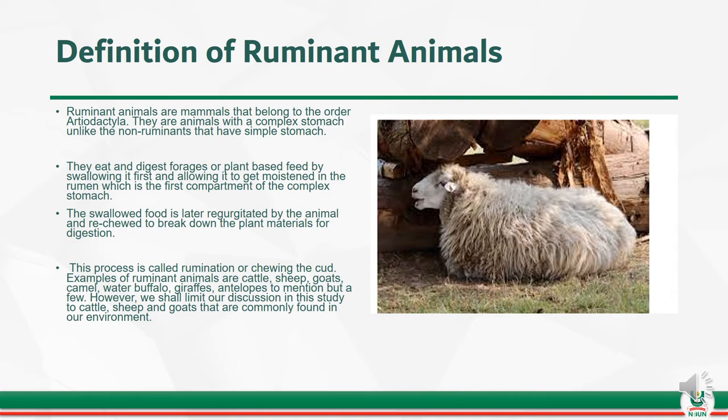Ruminant animals are mammals that belong to the order Artiodactyla. They are animals with a complex stomach, unlike the non-ruminants that have a simple stomach. They eat and digest forages, or plant-based feed, by swallowing it first and allowing it to get moistened in the rumen, which is the first compartment of the complex stomach.